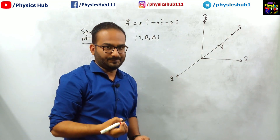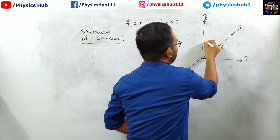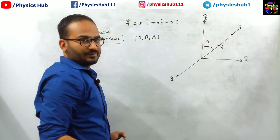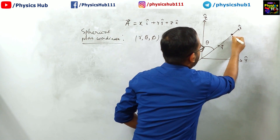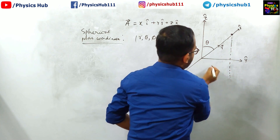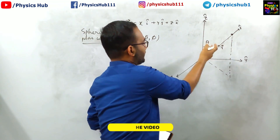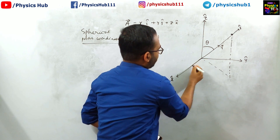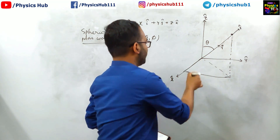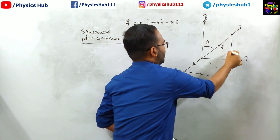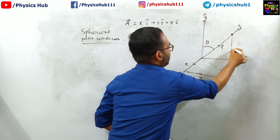What about theta? This vector R makes an angle theta with the z-axis. If you take a projection on the x-y plane, to reach to this point, you go along the x direction, then you go along the y direction, then you go along the z direction, and in that way you get to reach your desired point. This was your x, this was your y, this was your z.